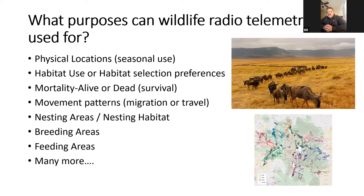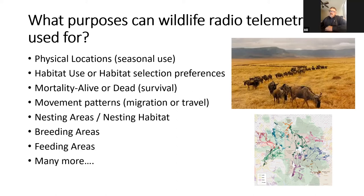Telemetry can be used for breeding areas — if you know animals are in an area breeding, you can decide not to disturb that area during spring or summer when they're giving birth. It can also help determine feeding areas: go in, see what animals are using for food, and determine whether that area needs protection as a critical winter resource for deer, elk, or birds. Those are some of the main uses wildlife biologists employ radio telemetry for.